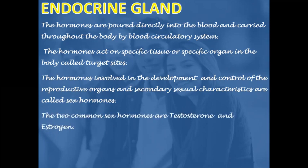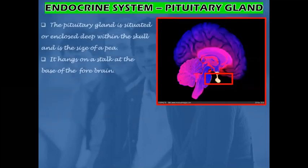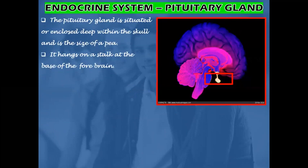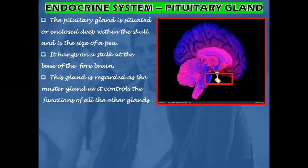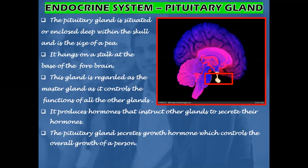The hormones involved in the development and control of the reproductive organs and secondary sexual characteristics are called sex hormones. The two common sex hormones are testosterone and estrogen. The pituitary gland is situated deep within the skull and is the size of a pea. It hangs on a stalk at the base of the forebrain. This gland is regarded as the master gland as it controls the functions of all the other glands.